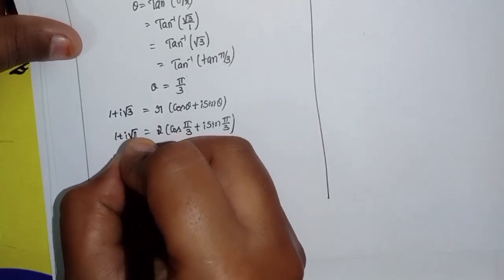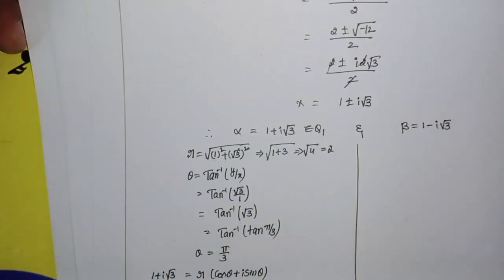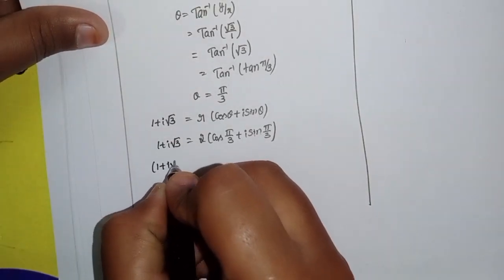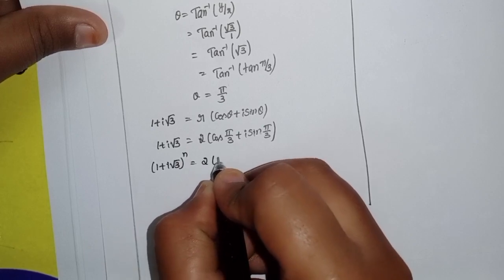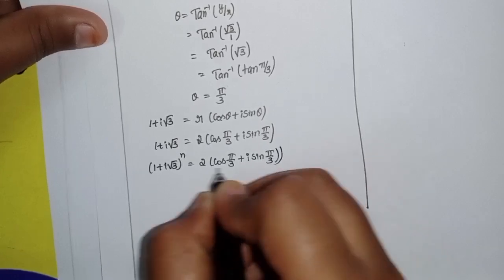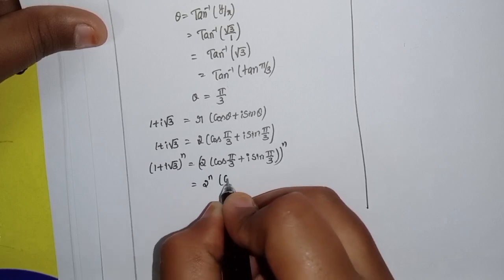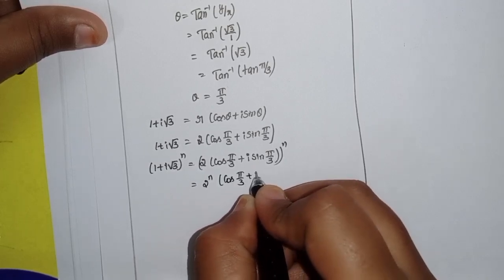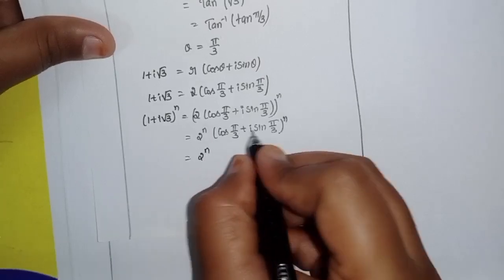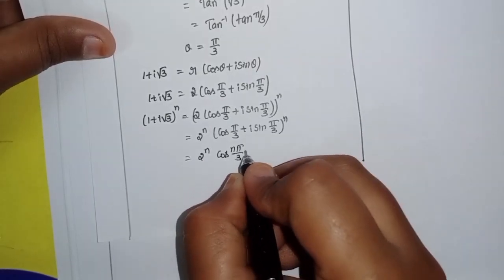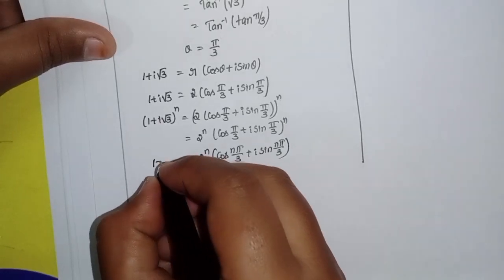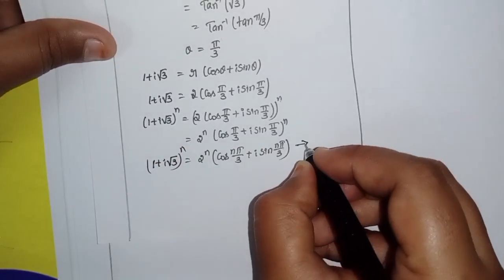Now raising alpha to the power n: (1 + i√3)^n = [2·(cos(π/3) + i·sin(π/3))]^n = 2^n · (cos(π/3) + i·sin(π/3))^n = 2^n · (cos(nπ/3) + i·sin(nπ/3)). This is Equation 1.